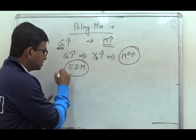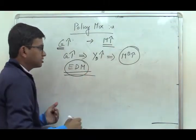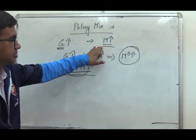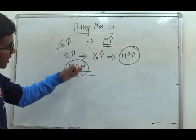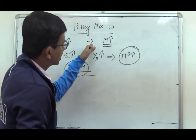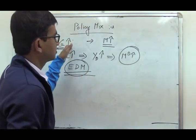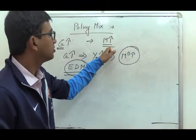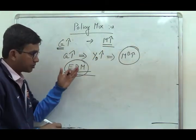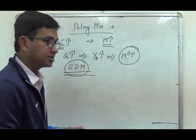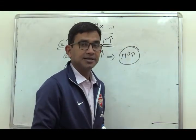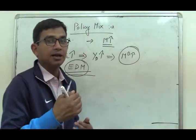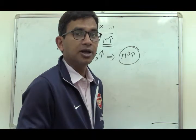In the case where government expenditure is not supported by an increase in money supply, there will be a higher increase in the rate of interest. But here, the increase in government public expenditure is being supported by money supply, so the effect of excess demand will be dampened. That means there will be less increase in the rate of interest, and consequently there will be a less volume of crowding out effect.